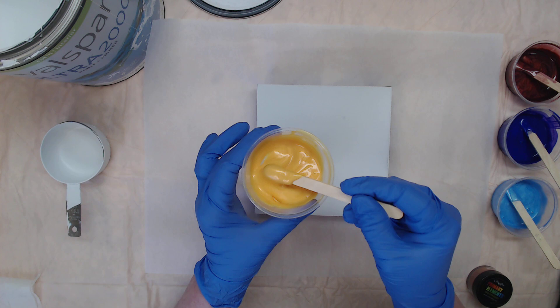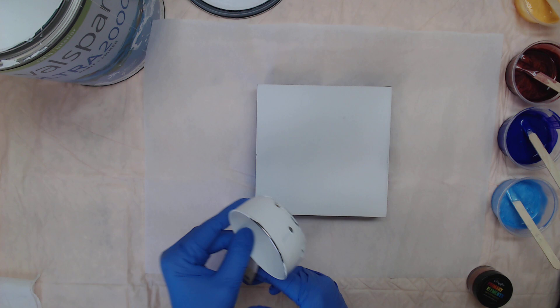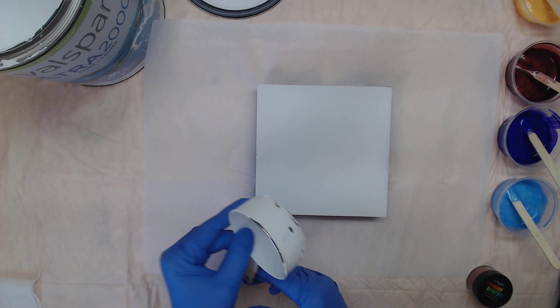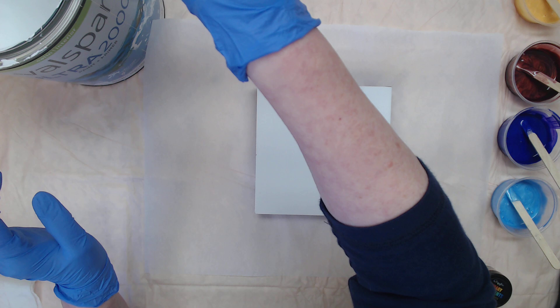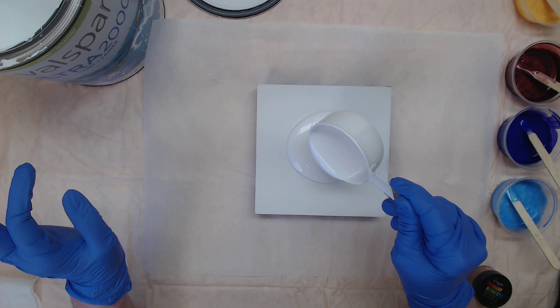So I like to use the Behr Marquee 2000, this one is a satin interior house paint. So I like to use about a little shy of a half a cup to scoop, get myself a really nice puddle there. Don't be afraid to use it, that's your secret there.